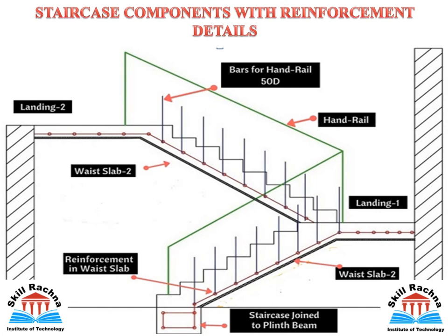Now let's understand the staircase components with basic reinforcement details. In the figure, we can see from the lower floor moving towards landing one and then towards landing two. We can see bars for the handrail, written as 50D, where D is the diameter of the bar. For example, if using a 12 mm dia bar, we provide 50 × 12 = 600 mm length of bars for RCC handrails. We can also see the waist slab, which needs to be designed by considering all the loads.